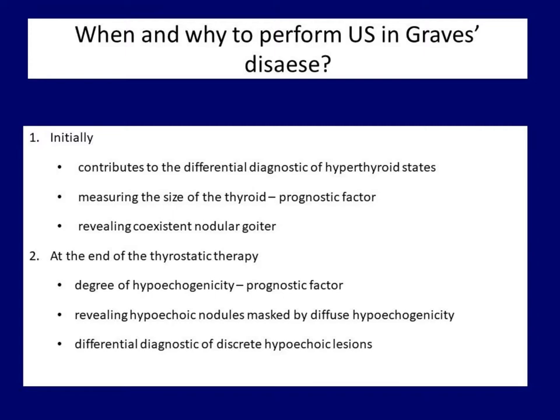Graves disease is characterized by a frequent, more than 50% risk of a later relapse. One of the most important prognostic factors is the size of the thyroid. As a rule of thumb, in a goiter exceeding 50 ml, the chance of recurrence is very likely and such patients are candidates for definitive therapy as early as the first onset of hyperthyroidism. The next role is the recognition of a co-existent nodule.